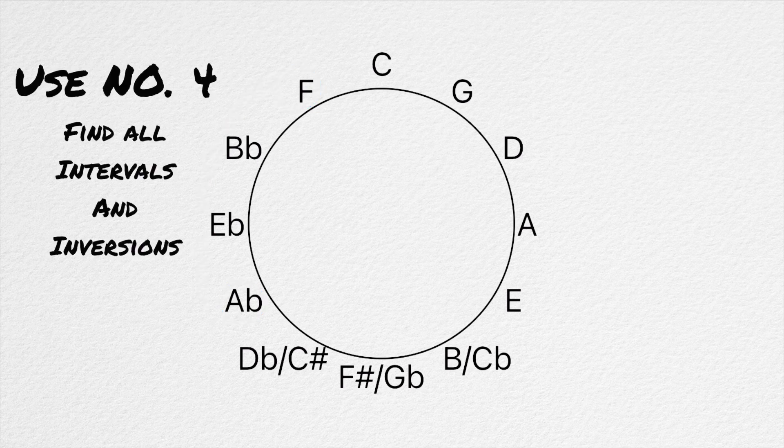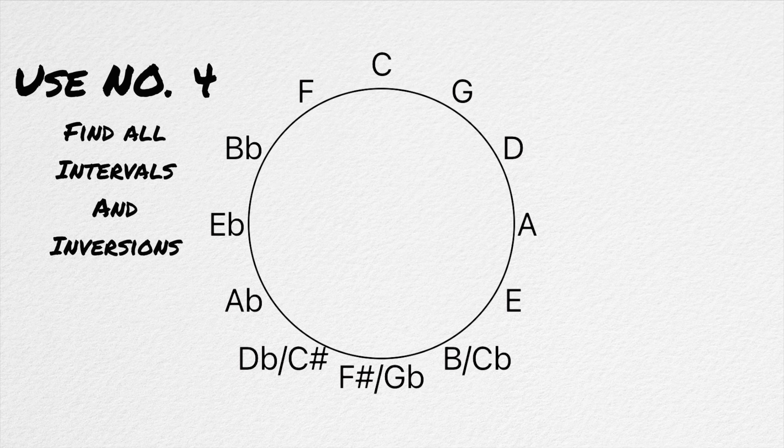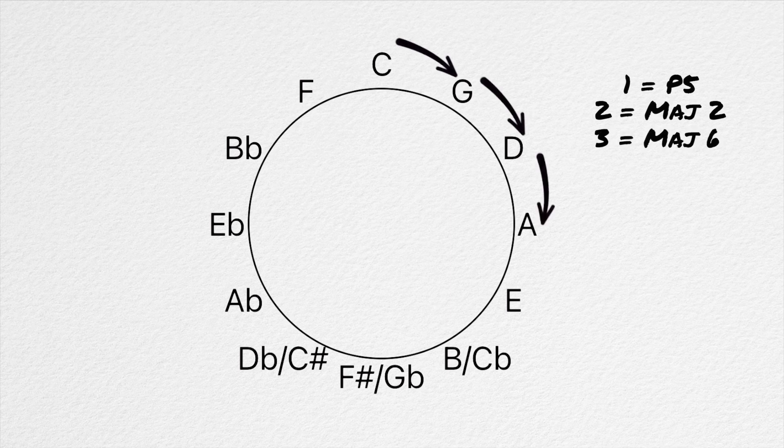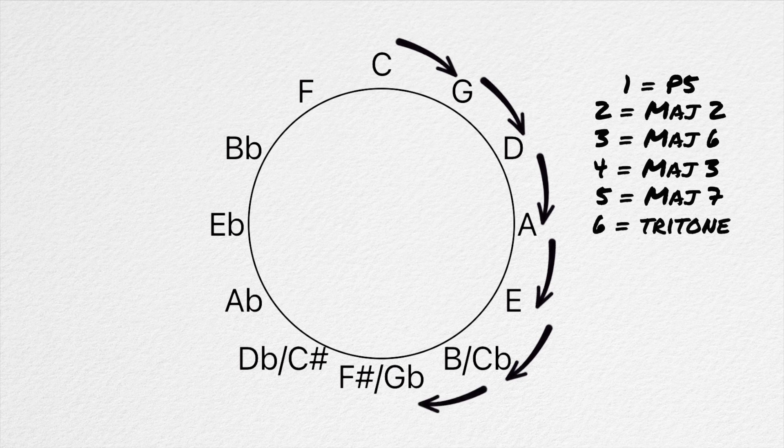Every interval and its inversion can also be found on the circle. Each interval is associated with a certain amount of steps in each direction. Starting from C, going clockwise one step equals a perfect fifth. Two equals a major second. Three equals a major sixth. Four equals a major third. Five equals a major seventh. And six equals a tritone.